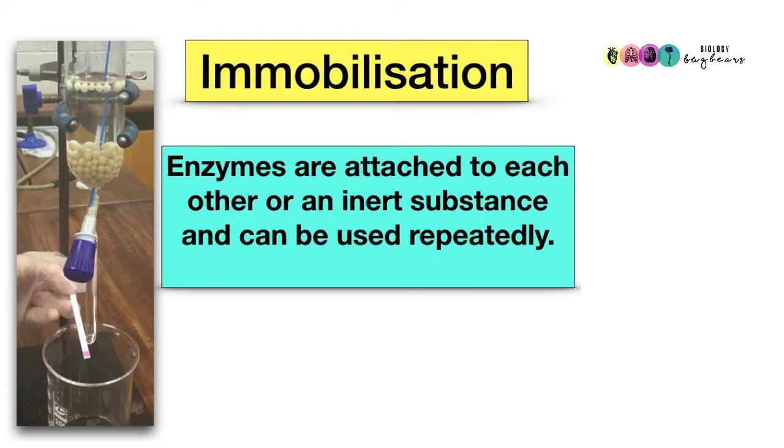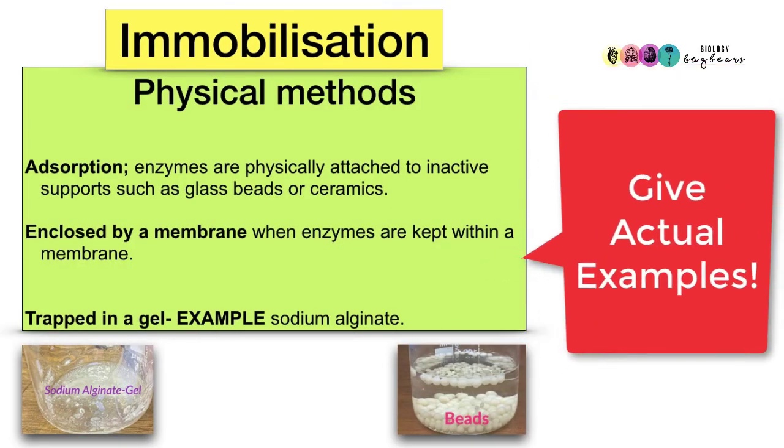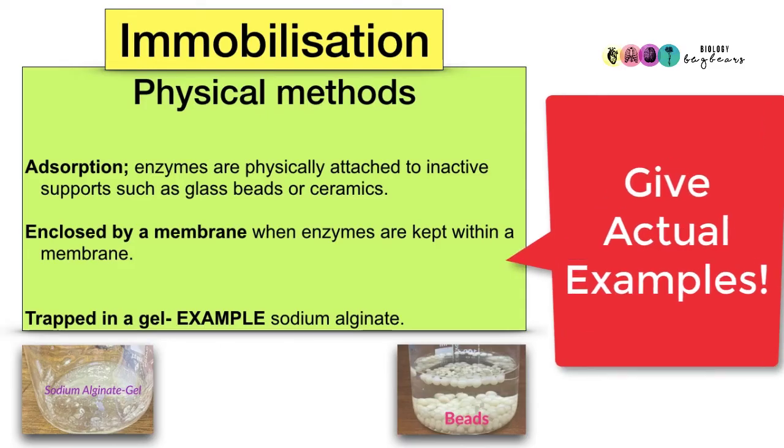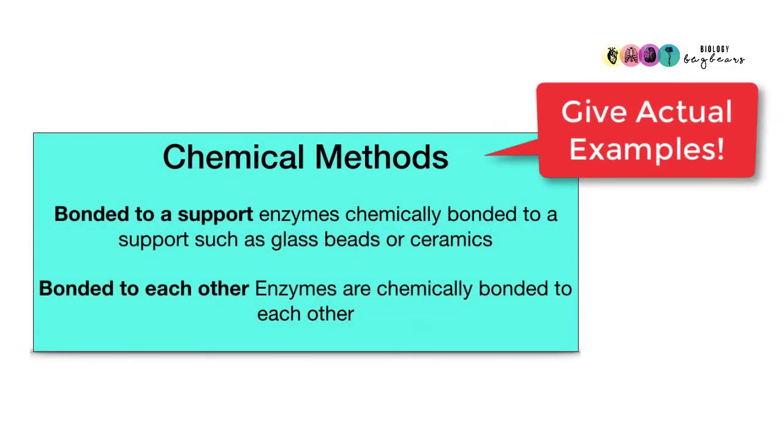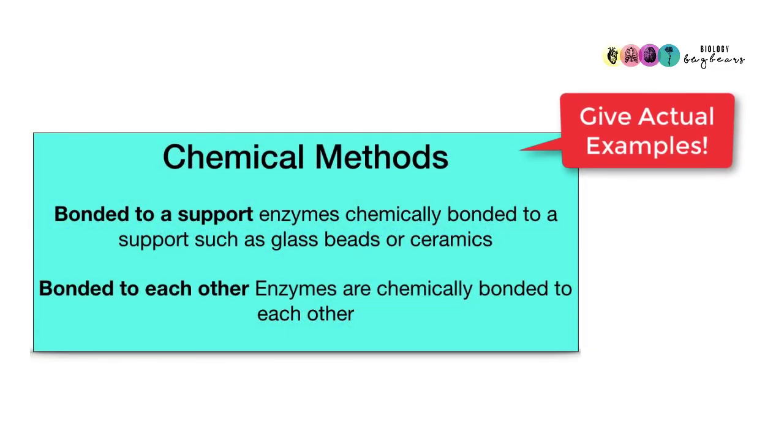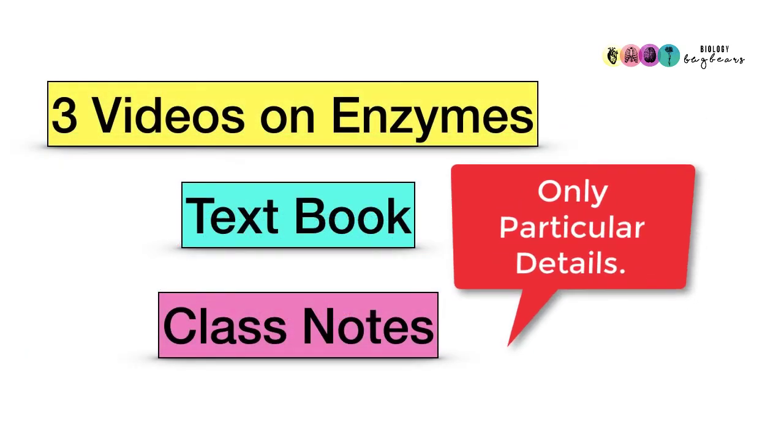What is enzyme immobilization is another difficult or tricky topic. Enzymes are attached to each other or in an inert substance and can be used repeatedly. Immobilization can be achieved through physical methods, and you must give actual examples such as adsorption. The enzymes are physically attached to glass beads or ceramic beads. They're either enclosed in a membrane or they're trapped in a gel like sodium alginate. And also chemically by bonding the enzymes to inert supports or bonding them to each other.